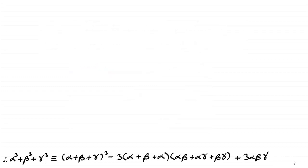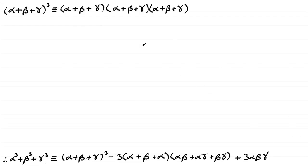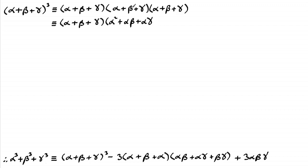We start with alpha plus beta plus gamma and cube all of this. Write this as three brackets. Then copy in that first bracket — alpha plus beta plus gamma — and expand the last two brackets. Doing alpha times each of the three terms gives alpha squared plus alpha beta plus alpha gamma. Beta times each term gives alpha beta plus beta squared plus beta gamma. And gamma times each term gives the remaining three terms.